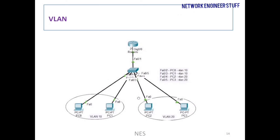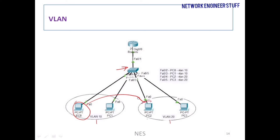I have a diagram — if you get an opportunity in your interview you may explain with such diagrams. We have a switch with four PCs: PC0, PC1, PC2, and PC3. All four PCs are in the same physical location but they are separated logically via VLANs. PC0 and PC1 are in VLAN 10, and PC2 and PC3 are in VLAN 20. PC0 can communicate with PC1, and PC2 can communicate with PC3, because they are logically in different networks.